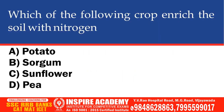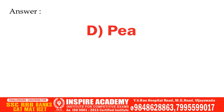Which of the following crop enriches the soil with nitrogen? Options: Potato, Sorghum, Sunflower, Pea. The correct option is Pea.